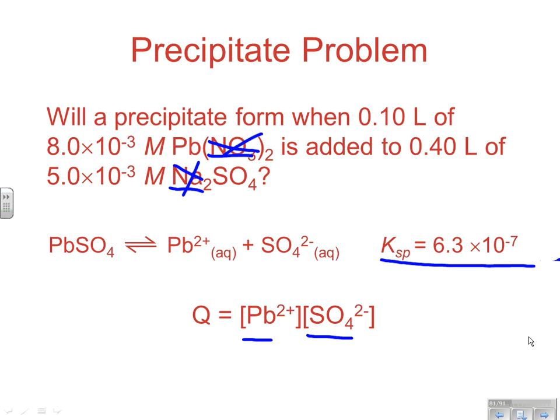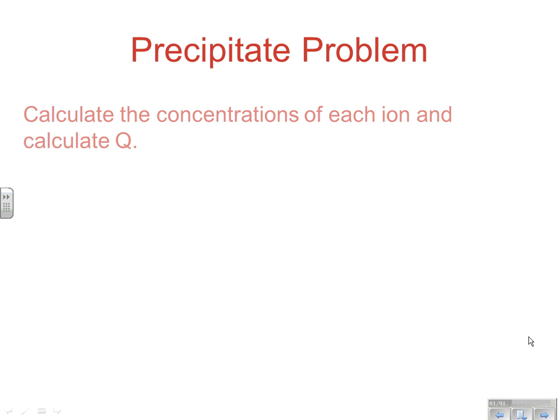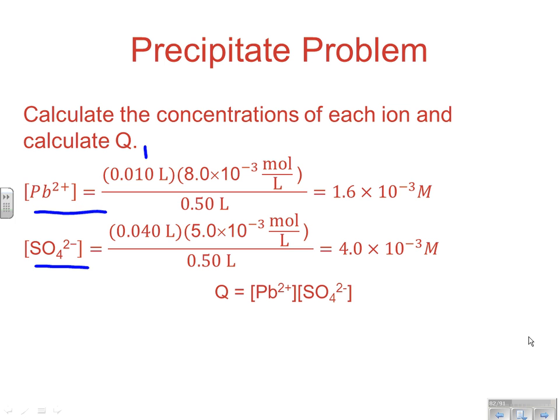When you write the Ksp expression, that would be the lead times the sulfate has to equal our K value. If we're not sure if we're at equilibrium or not, and we're not sure if we've formed a precipitate or not, we're calculating a Q. Keep in mind, we combine two things of two different volumes together. So what does that affect? We dilute them. So one of the things we have to do in the process of this problem is calculate what these concentrations are. We take the volume times the molarity, and you've got how many moles at the old volume, and then divide by the new volume to get the new concentration. Once we've done that for both things, we can plug those in and calculate Q.